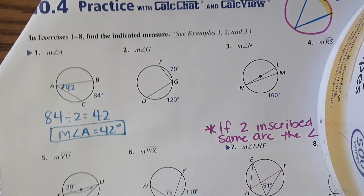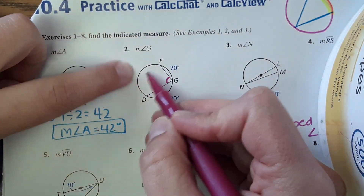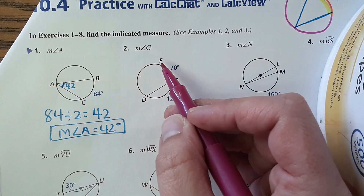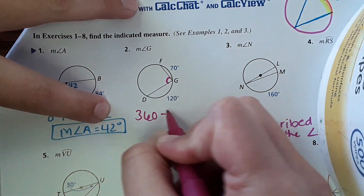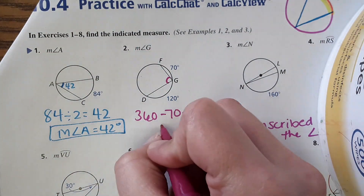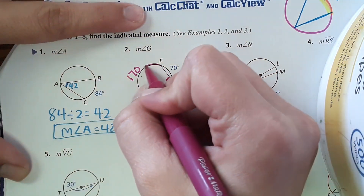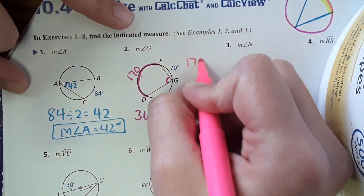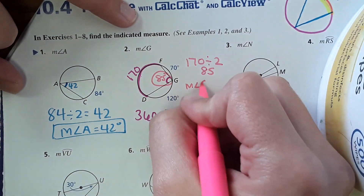Number two: find the measure of angle G. They don't give us the arc directly, but they do give us two arcs. Since arcs around a circle add to 360°, we solve: 360 minus 70 minus 120 gives us 170°. That's the intercepted arc, and then 170 divided by 2 gives us 85°. The measure of angle G equals 85 degrees.